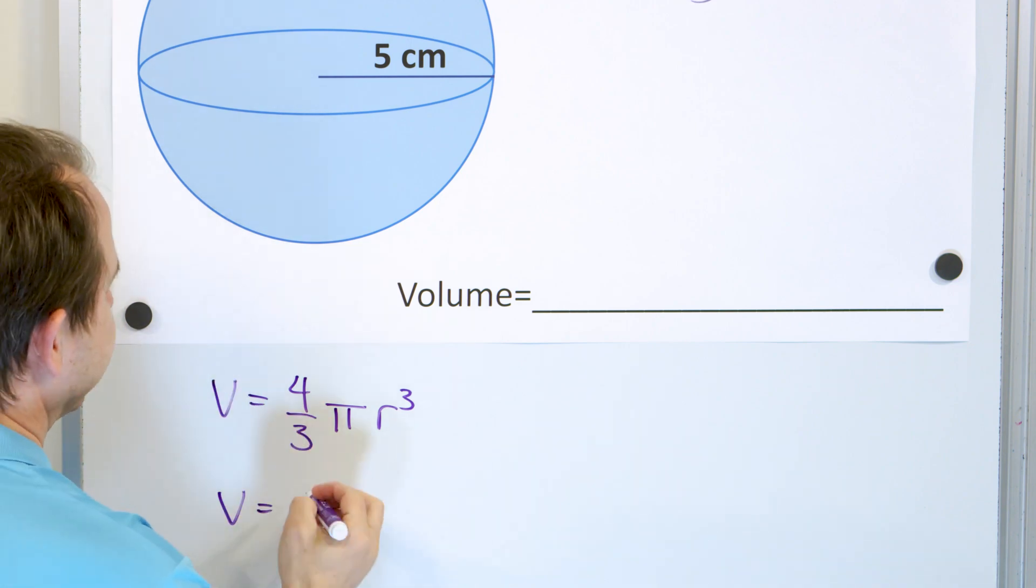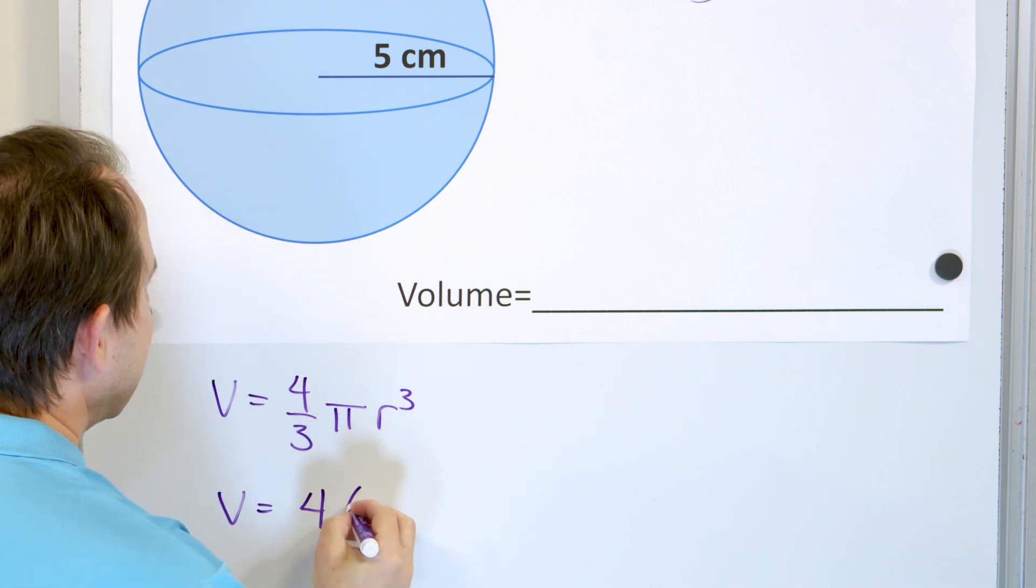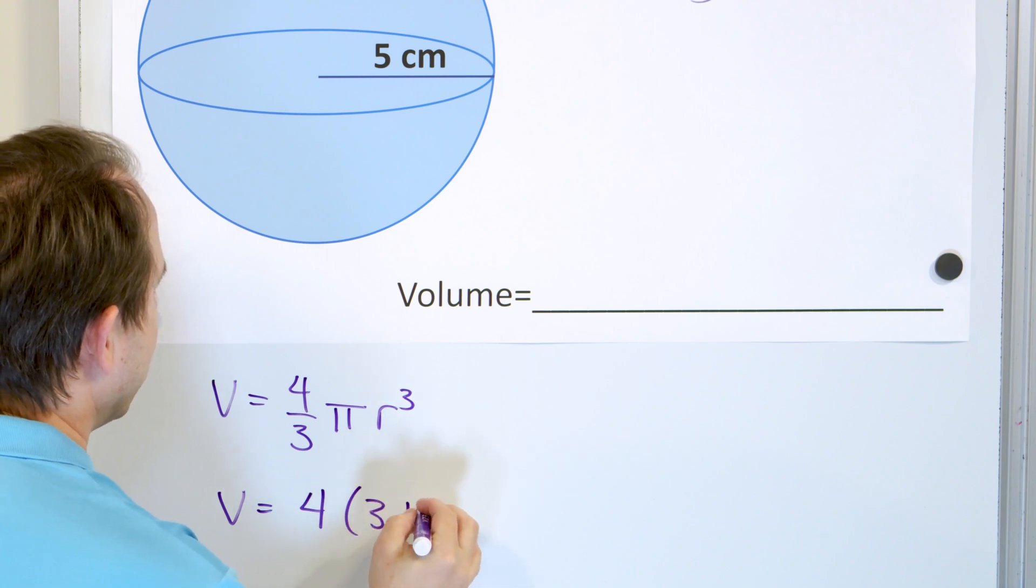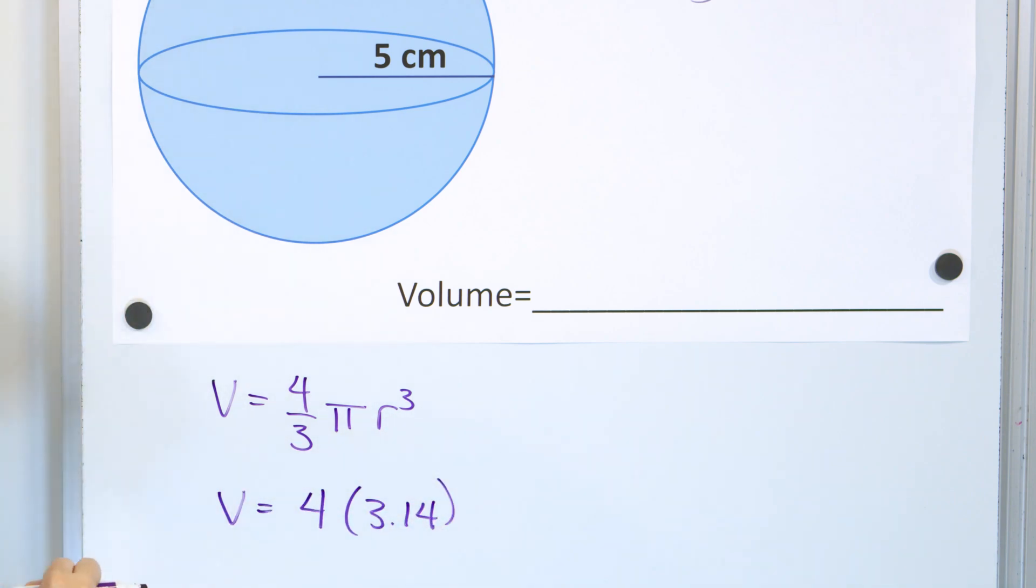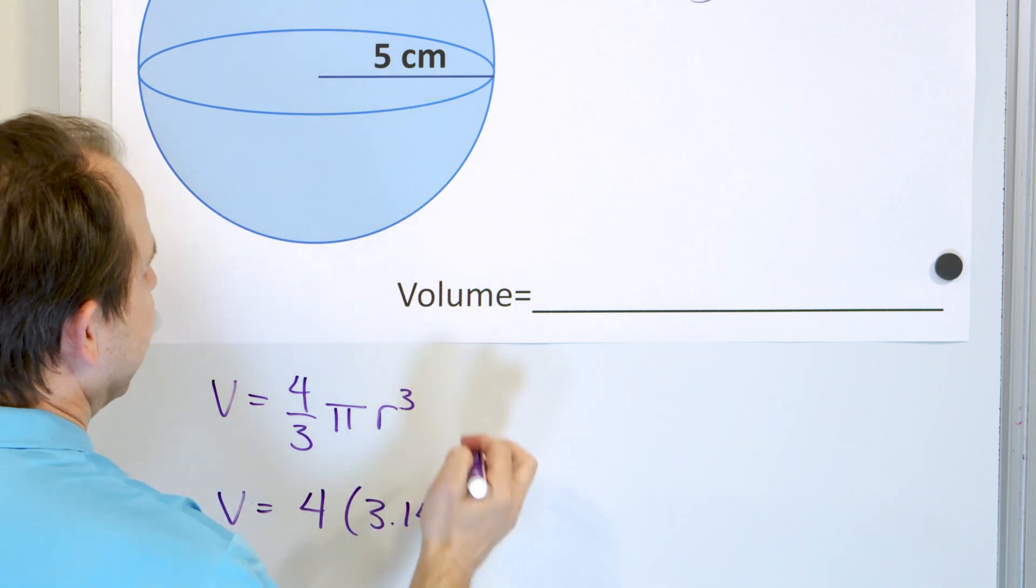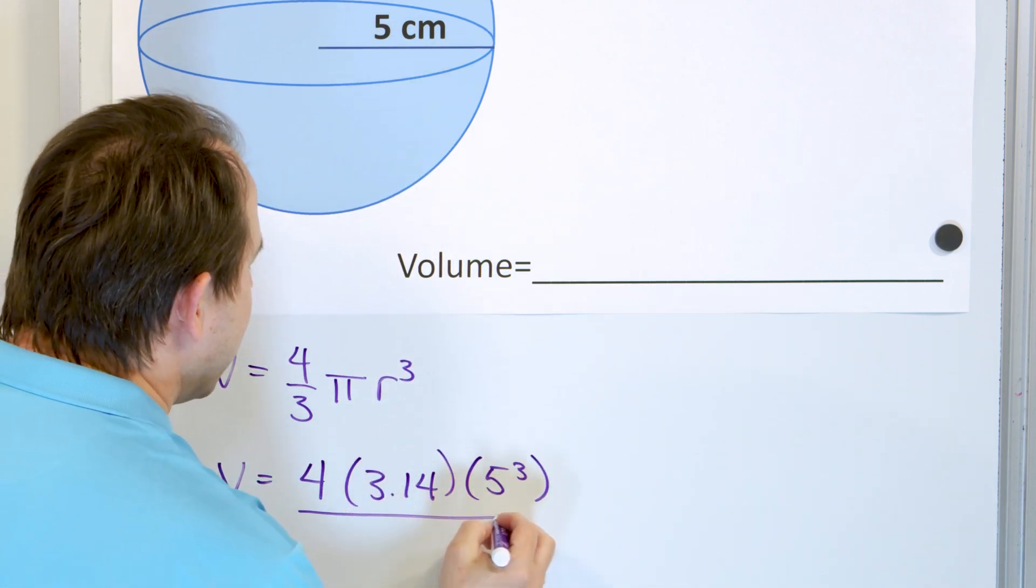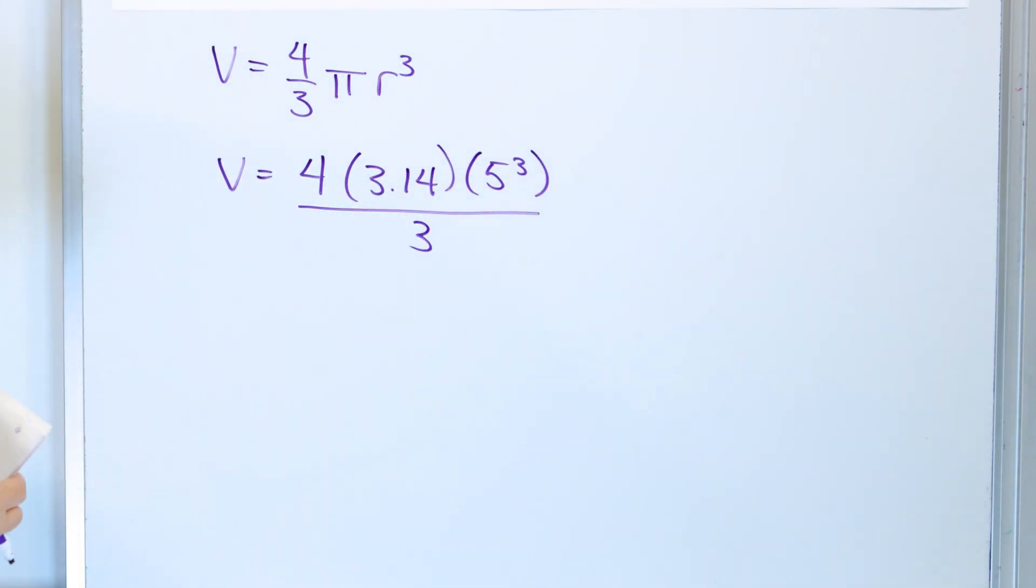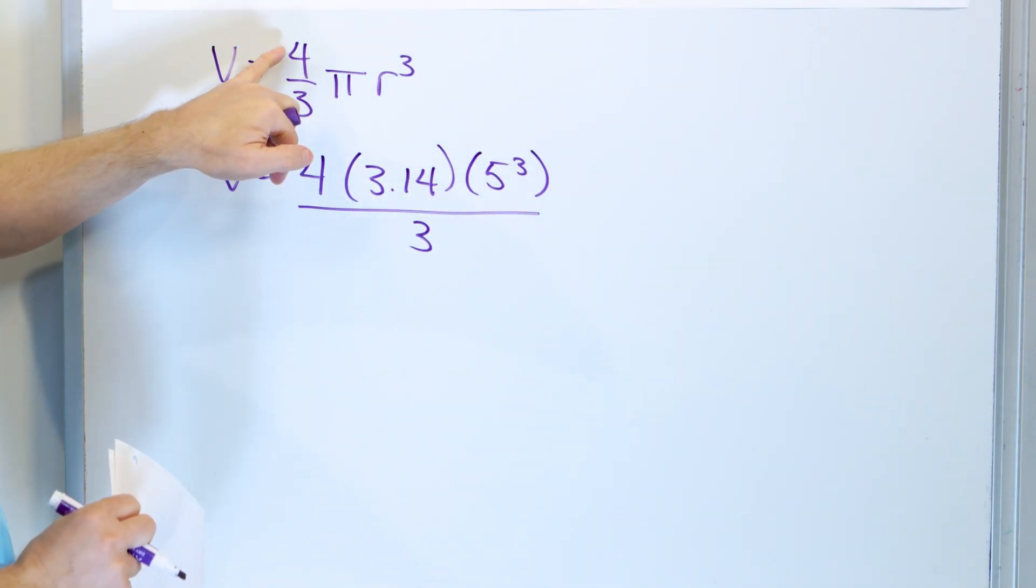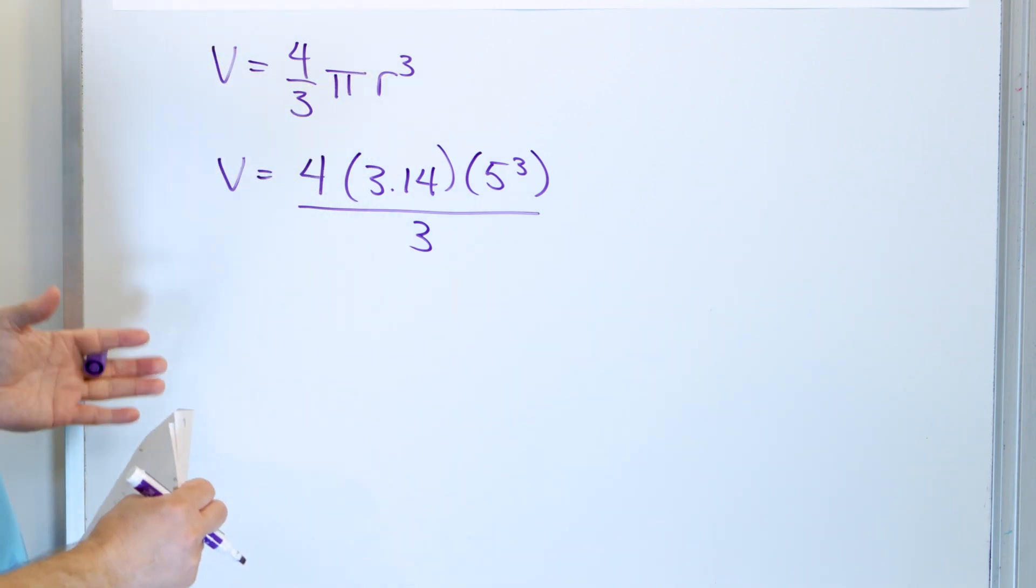Now the way I'm going to write it is as follows. I'm going to put the 4 on the top times pi, I'm going to write it as 3.14, of course we're rounding it to two decimal places, and r in this case is 5, so I'm going to put it as 5 cubed, and then I'm going to write everything on the bottom divided by 3. So you can write it like this, 4 times pi times r cubed divided by 3, or you can leave it as 4 thirds times pi r cubed, it's exactly the same thing.